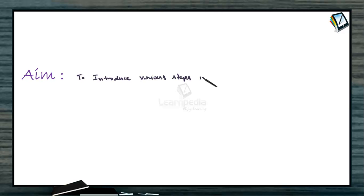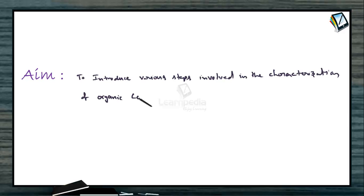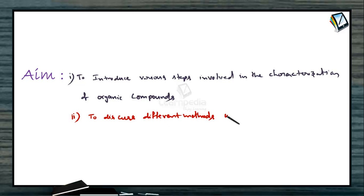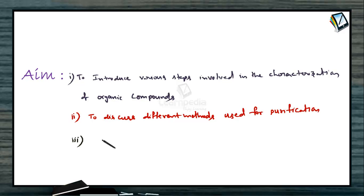Our aim is to introduce the various steps involved in characterization of organic compounds — especially dealing with organic compounds only. Next, we will discuss methods involved in the purification of the compounds and different methods used for purification, and also introduce quantitative analysis — that means the composition of the given organic compound.